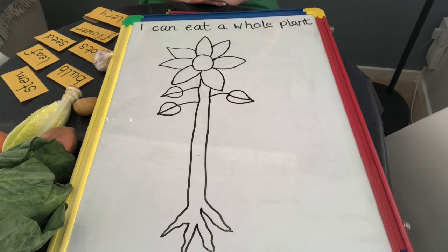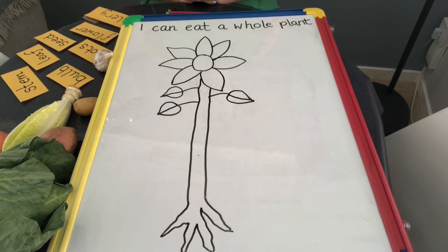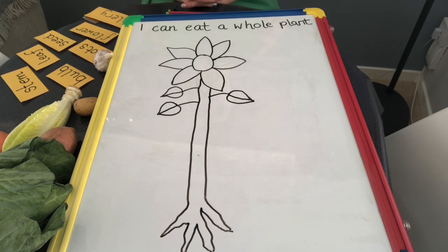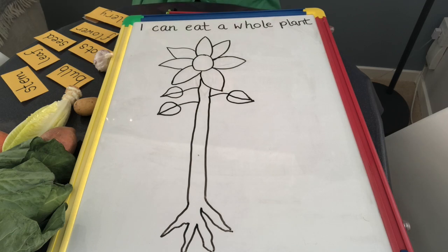This week we're learning about lots of different vegetables that we can eat, and I want to prove that we can eat all of a plant — the whole thing, all of the different parts. So let's have a look at the different ways that we can eat different parts of a plant.